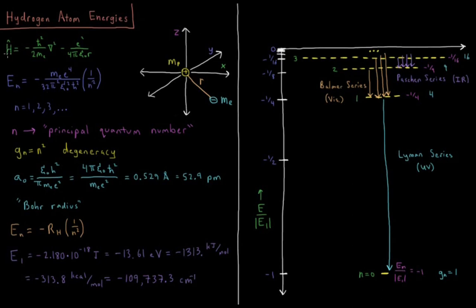Our Hamiltonian from the previous video equals minus h-bar squared over 2 times mass of the electron times del squared, the Laplacian operator, minus e squared over 4 pi epsilon naught r, the Coulomb potential, the potential energy this electron feels due to the presence of the proton.